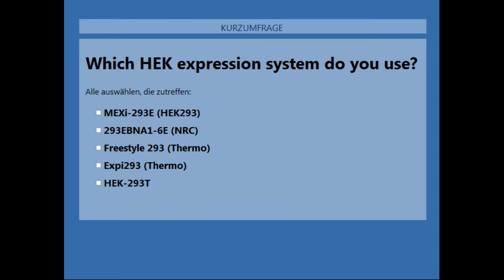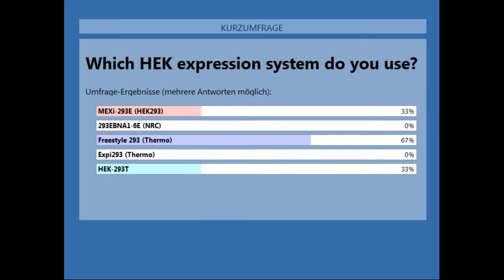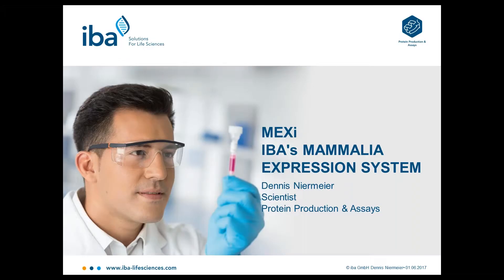The Maxi 293E system, the 293 Epna 16E system from the NRC Institute, the Freestyle 293E system, the XB 293E system, or the HEK 293E system. 33% are already using the Maxi system, then 67% use the Freestyle system, and another third uses the HEK 293E system. No one is using the Epna 6E system or the XB system.